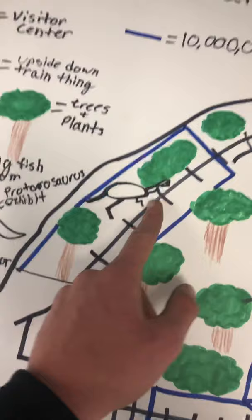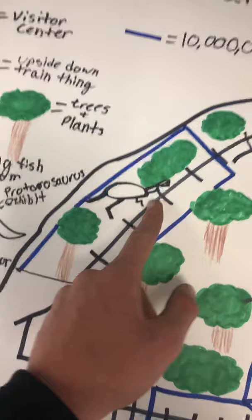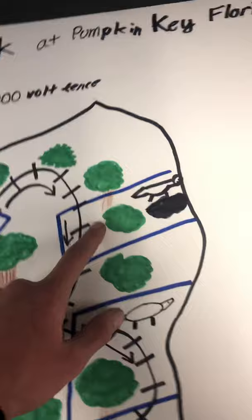You go all the way through the Theropod exhibit. You come around this bend right here to the Rancho Soar exhibit in a screw-up.